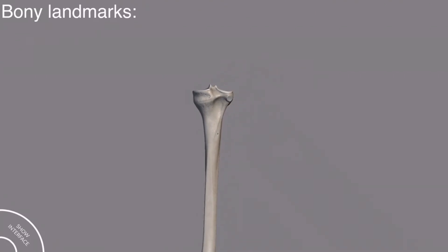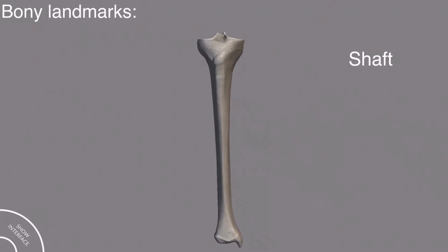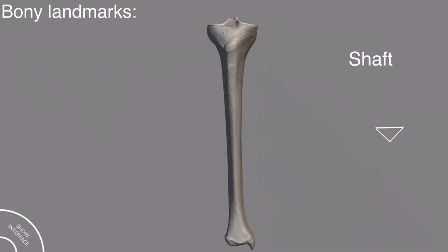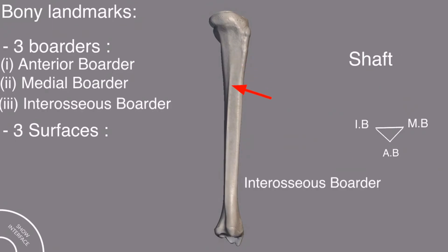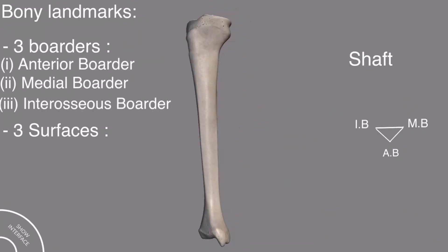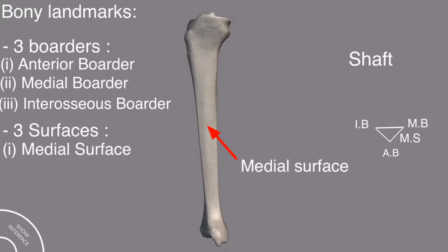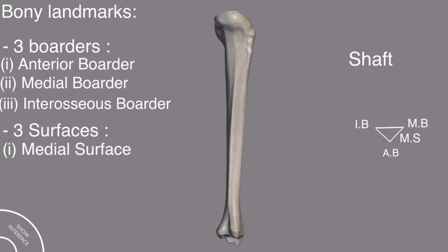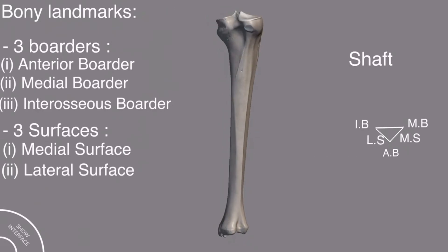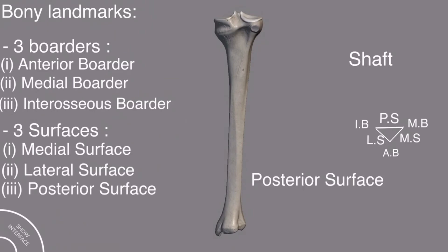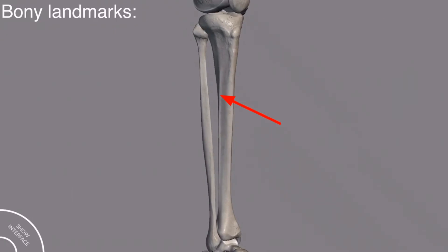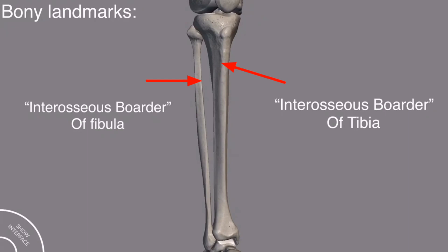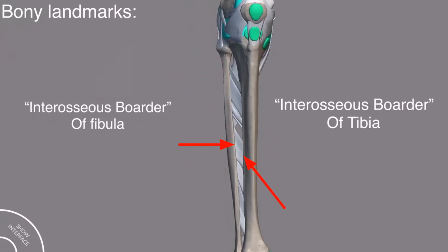Now for the shaft of the tibia bone: the shaft is triangular in structure, with three borders and three surfaces. We have the anterior border, the medial border, and the interosseous border. Between the anterior border and the medial border is the medial surface; between the anterior border and the interosseous border is the lateral surface; and between the interosseous border and the medial border is the posterior surface. The anterior border is more sharp and S-shaped. The interosseous border of the tibia faces the interosseous border of the fibula, and between these two there is the interosseous membrane.